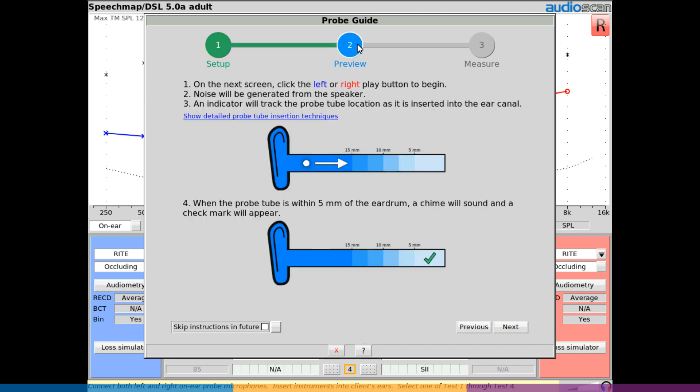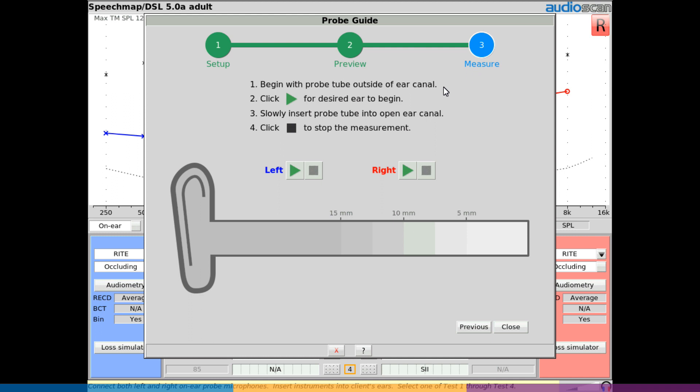The next tab is Preview, which provides procedural details for using ProbeGuide. To skip the Setup and Preview tabs in future, check this box. The third tab, Measure, is where you will perform the guided probe tube placement.